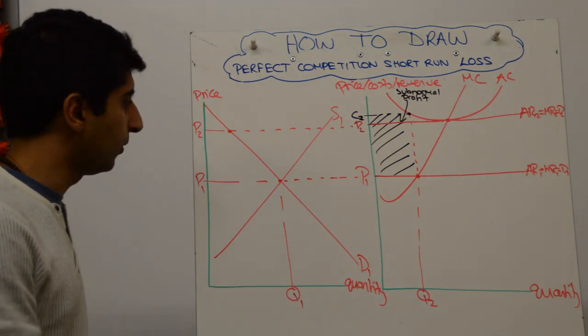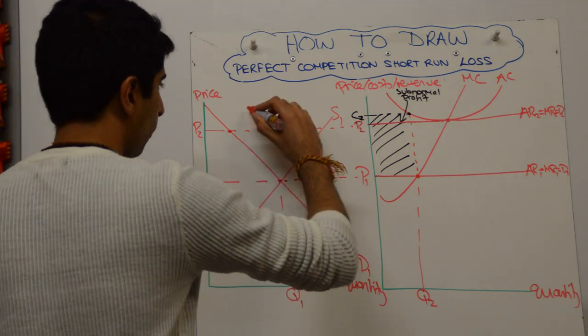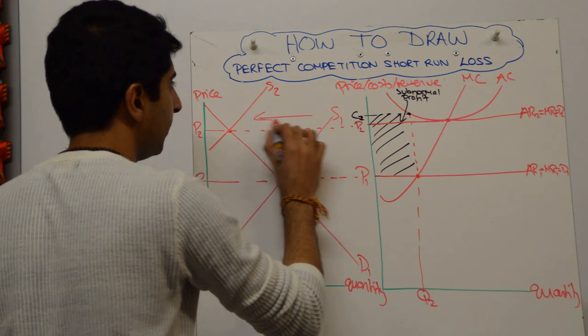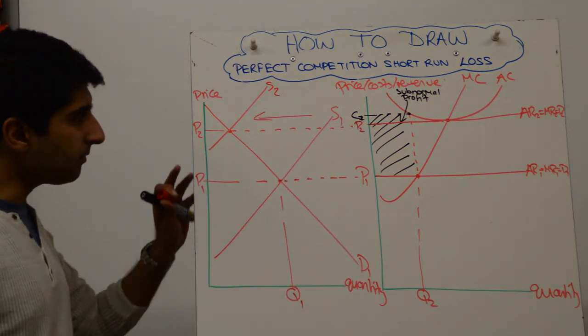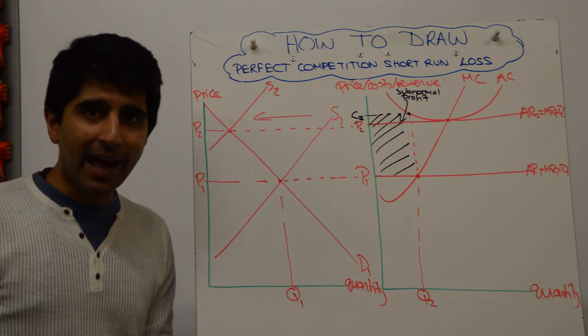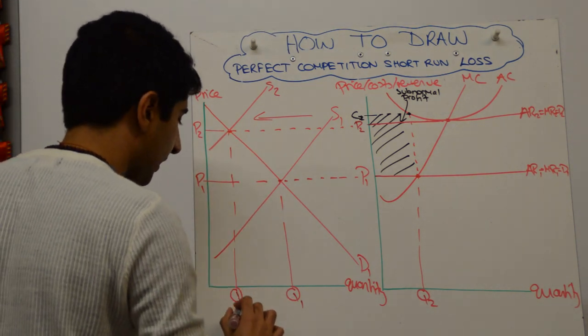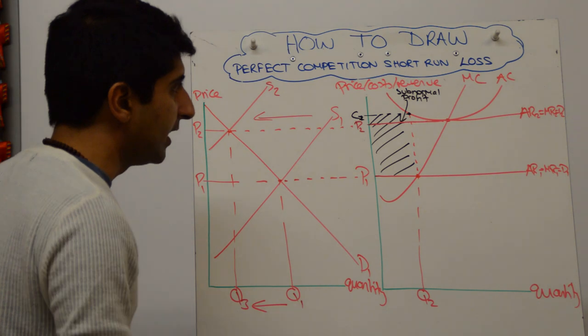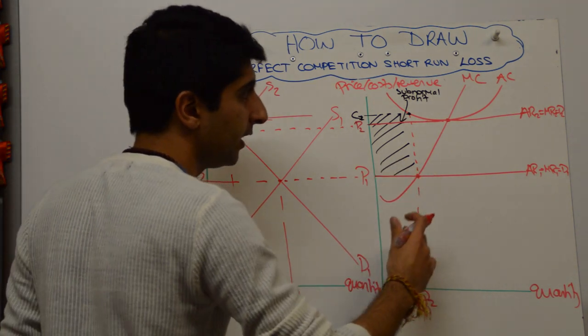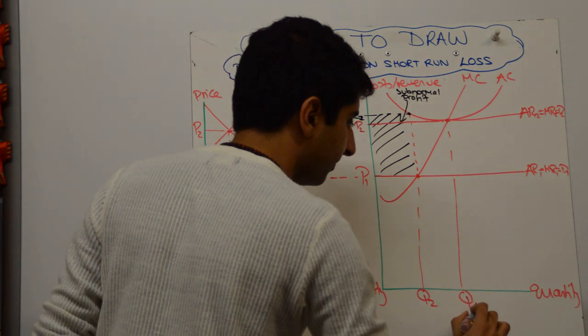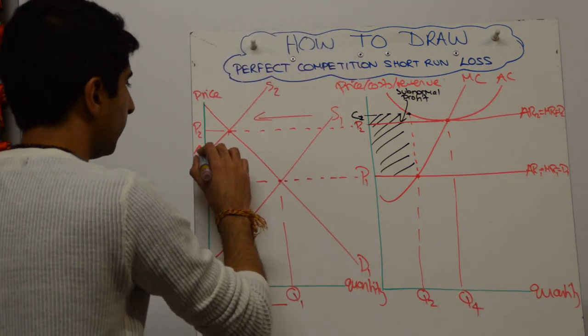This will shift the supply curve to the left, and will cut demand here now, to give us this new price of P2. So all you're looking to do is to draw a parallel shift of supply, something like that. Call it S2 and show that you shifted the curve like that. Now what we need to do is add up our quantity. So in the market, there's going to be a lower quantity. There are less firms in the market. And for the individual firm, there is going to be higher quantity as some firms have left. And that quantity is going to be Q4. And the price has risen from P1 to P2.